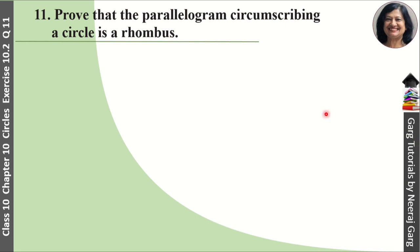Hi, this is Neeraj Garg and you are watching class 10th chapter 10 circles exercise 10.2 question number 11. Prove that the parallelogram circumscribing a circle is a rhombus.